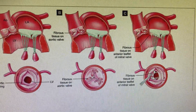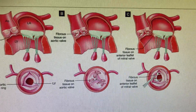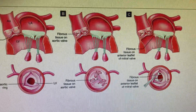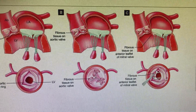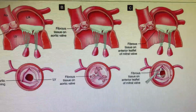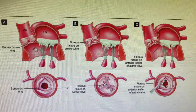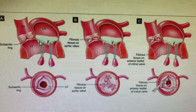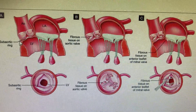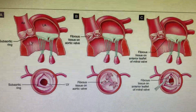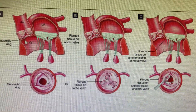About aortic stenosis — bicuspid, tricuspid, and mitral stenosis — we have already discussed. This is the sub-aortic stenosis. You can see that there is a membrane which is coming from the anterior mitral leaflet (AML) and getting into the sub-aortic membrane. This is the sub-aortic ring, below the aortic annulus.